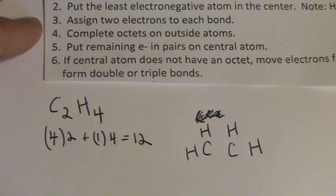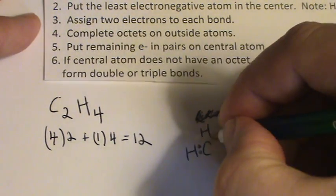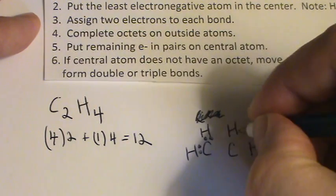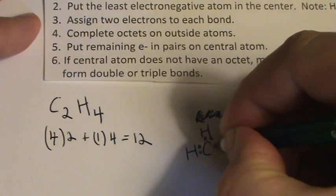And let's put two electrons between each bond. So they're chemically bonded, lower energy, more stable, and then one in the middle.